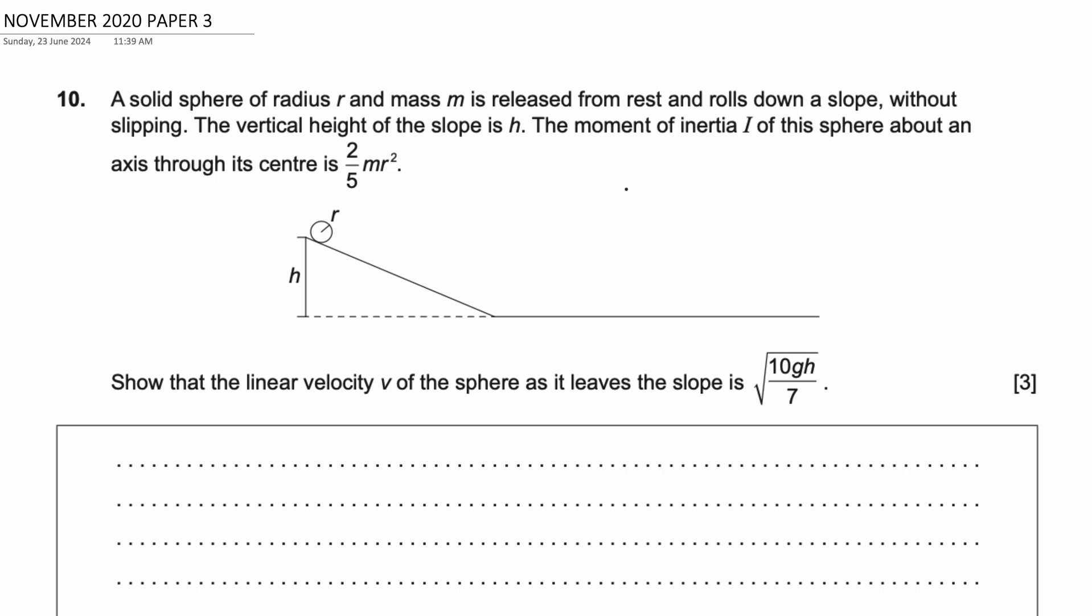Show that the linear velocity v of the sphere as it leaves the slope is √(10gh/7). So how can we solve this problem?